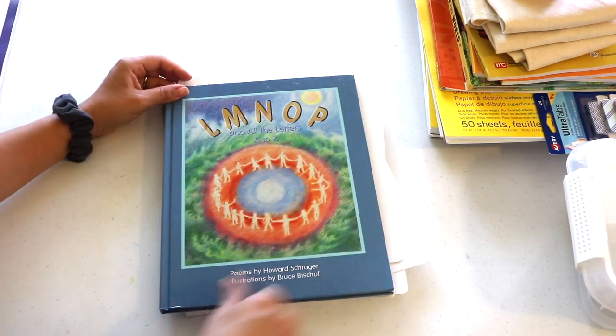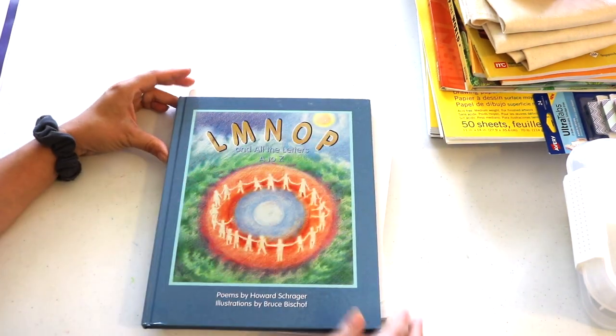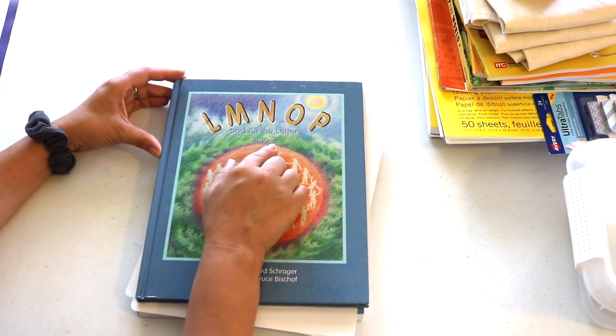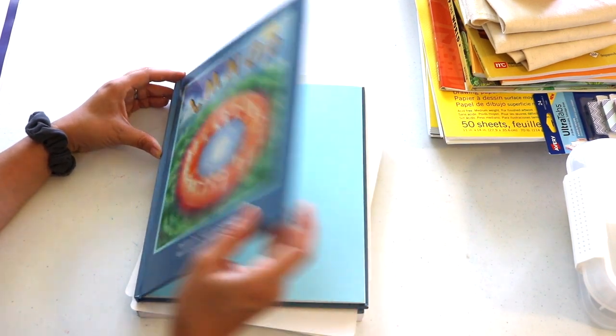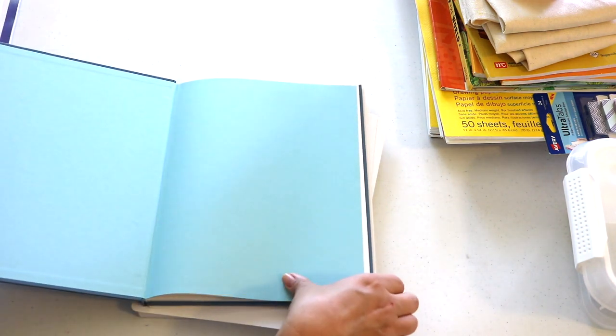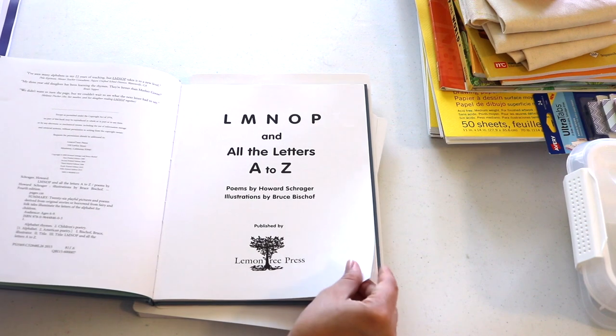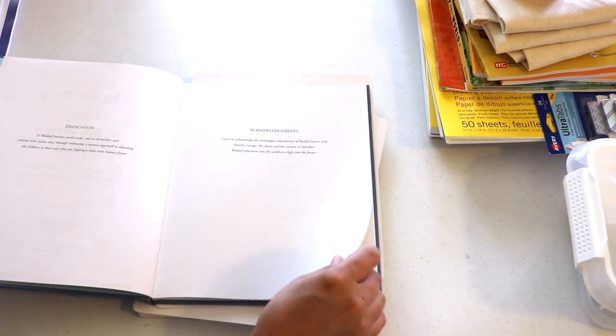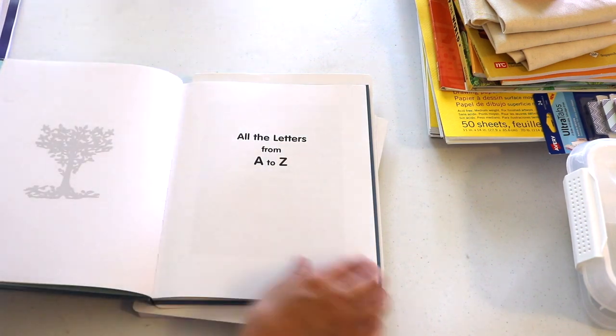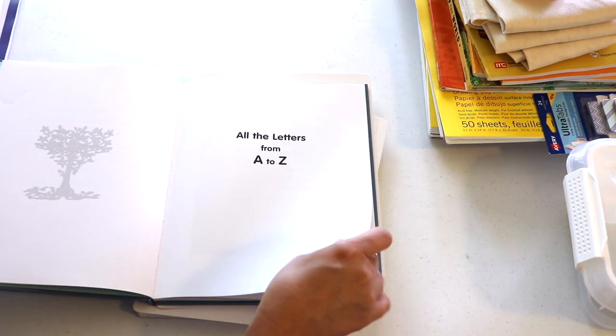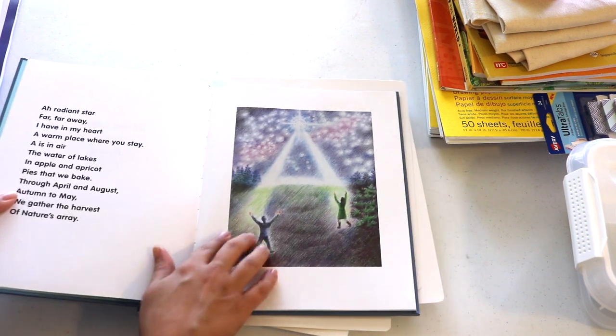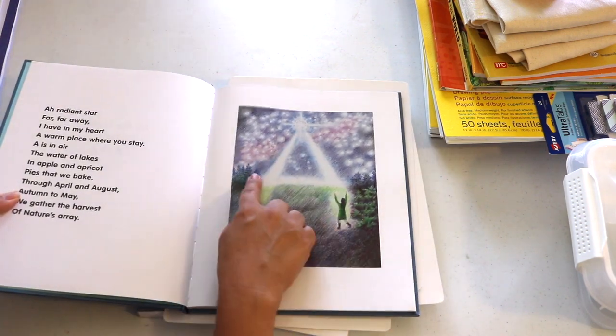Next by the same author is LMNOP and All the Letters A to Z. This is an alphabet book but also like a poetry book, and it's for teaching the alphabet and its phonetic sounds. It takes you through the entire alphabet with beautiful illustrations based and influenced from nature and the culture and style of art in the 14th through 16th centuries.